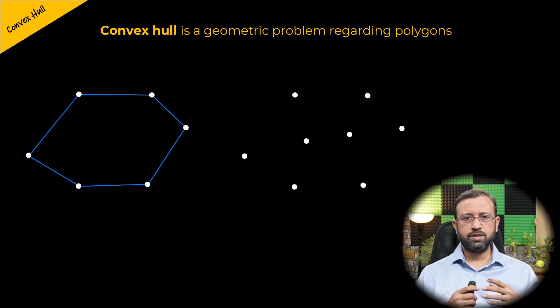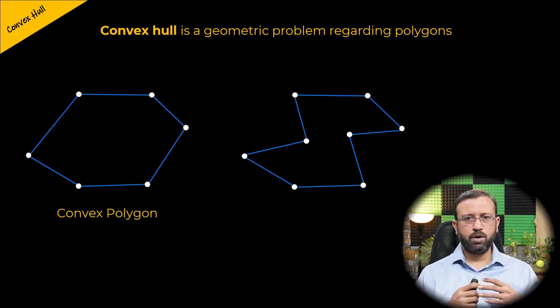Let us consider these eight points in the plane. If we join these points in this way, we also have a polygon. There are two types of polygons. The polygon on the left is the convex polygon and the polygon on the right is the non-convex polygon.